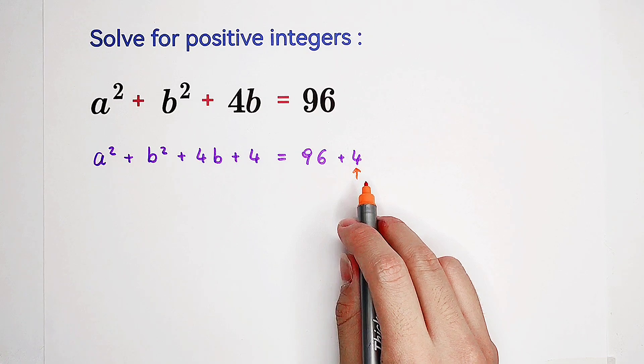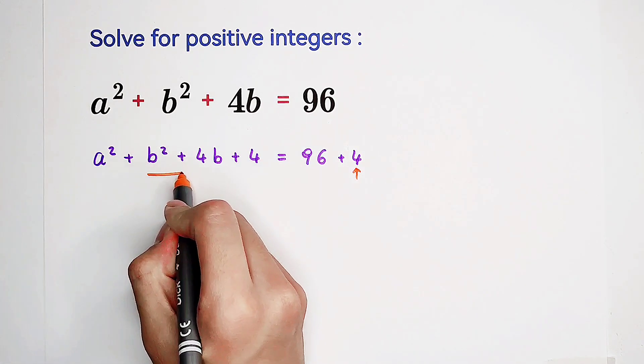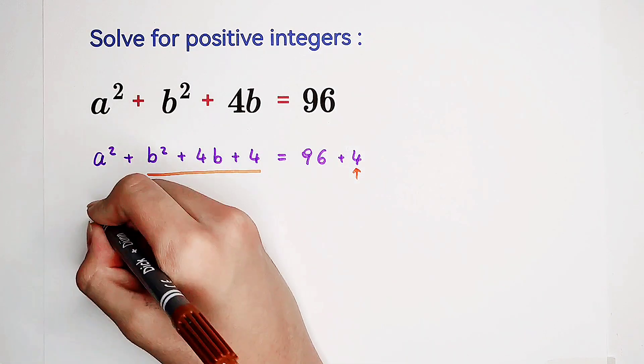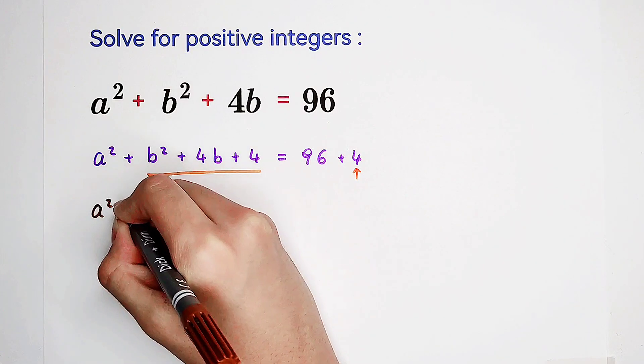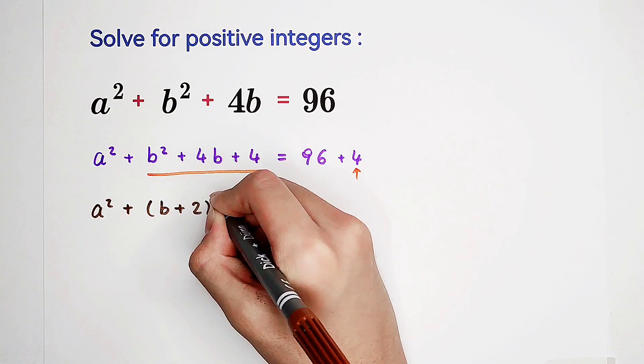The real reason is here. b squared plus 4b plus 4. This guy is a perfect square. It is a square term. It can be written as b plus 2 squared.